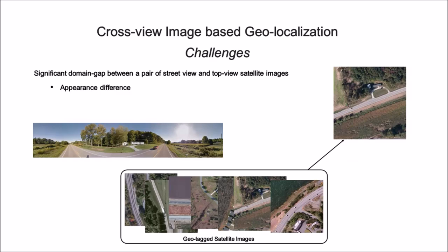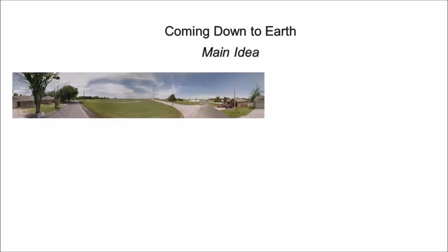The biggest challenge, however, comes from the dramatically different viewpoints of street and satellite images. Even for human eyes, it is far from obvious that two images show the same location. So, the inherent domain gap between the two inputs makes precise location retrieval extremely challenging.